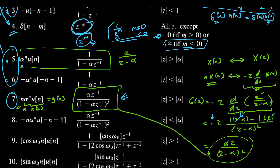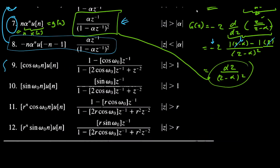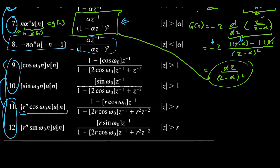Using the differentiation property again along with pair six, pair eight can also be derived. For pairs nine, ten, eleven, and twelve: pairs nine and ten are special cases of eleven and twelve respectively. Setting r equal to one in pair eleven gives pair nine — that is, cos(ω₀n)·u(n) — and similarly setting r equal to one in pair twelve yields pair ten. So proving pair eleven suffices for all four, since the same approach covers the remaining three.